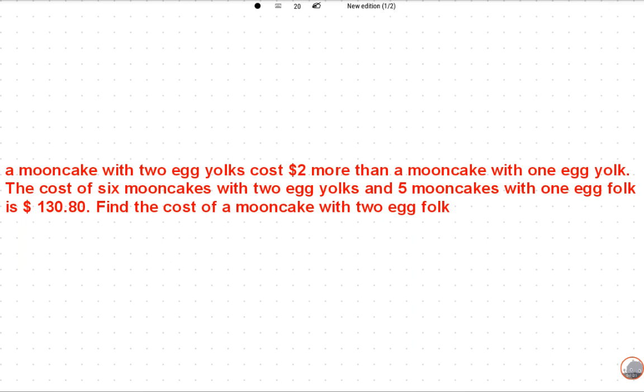Please subscribe to this channel. Okay, let's read this question. A mooncake with two egg yolks costs $2 more than a mooncake with one egg yolk.